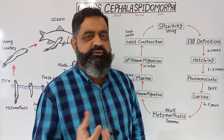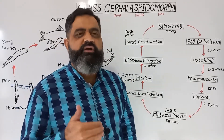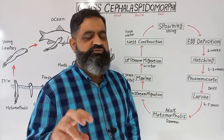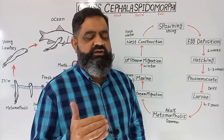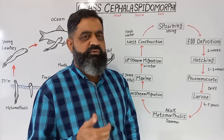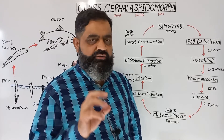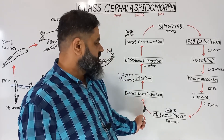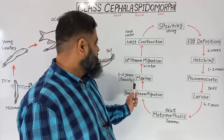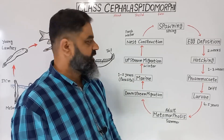In the ammocoete larval stage, they can spend four to five years in fresh water filter feeding. After four to five years they undergo metamorphosis, during which certain bodily changes take place — gills, fins, suctorial mouth, and horny teeth develop — and they become adult. This process usually takes place in summer or autumn. After becoming adult, they begin downstream migration, traveling towards the ocean or sea, where they spend one to two years as a parasite.